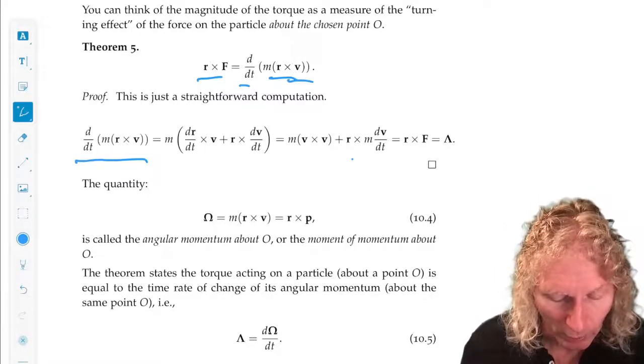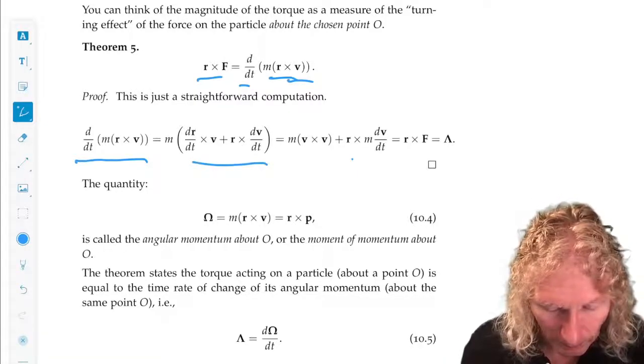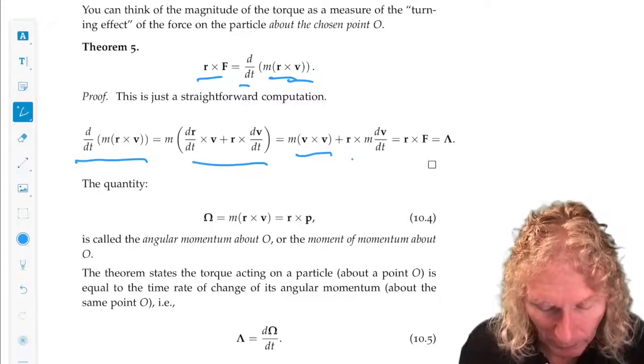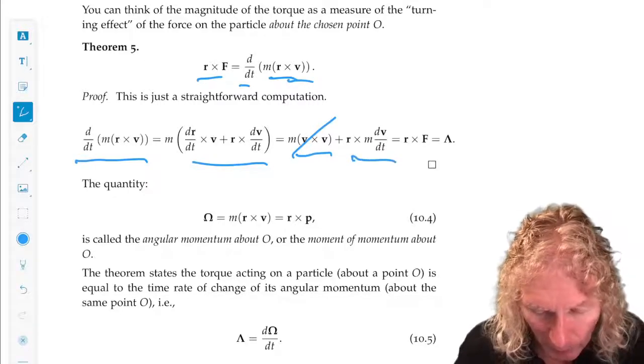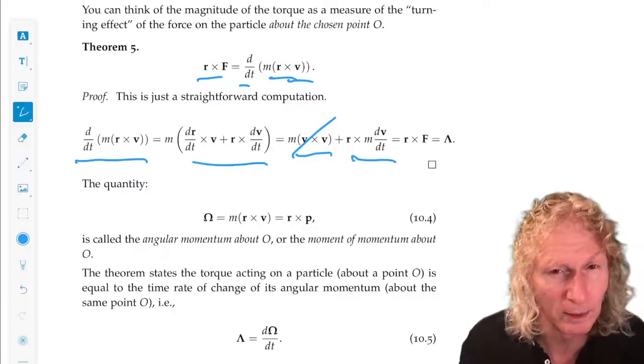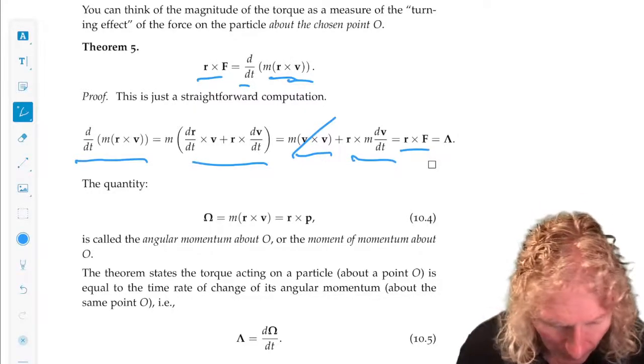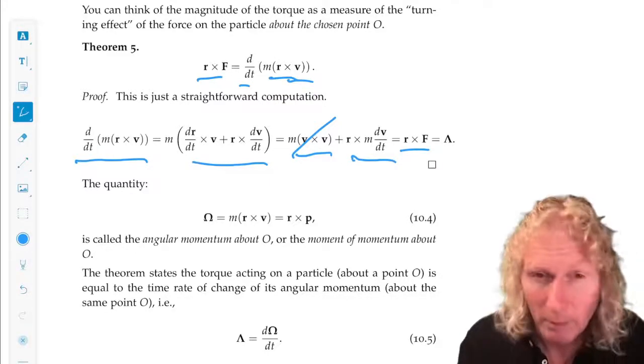And the cross product of any vector with itself is zero. And we're left with R cross M dV dt, but dV dt is the acceleration, so that's F, the force. And that proves the theorem.